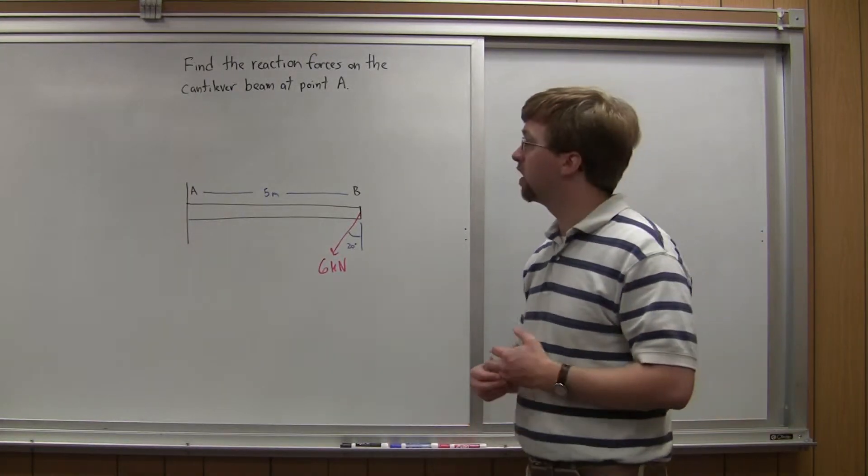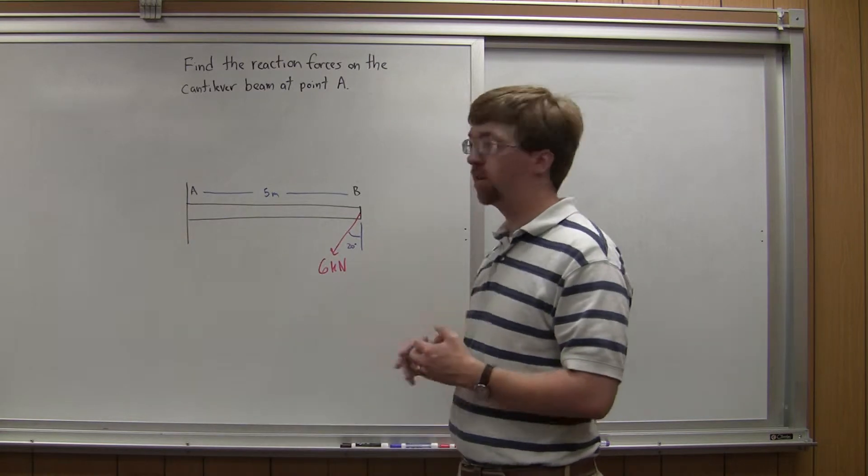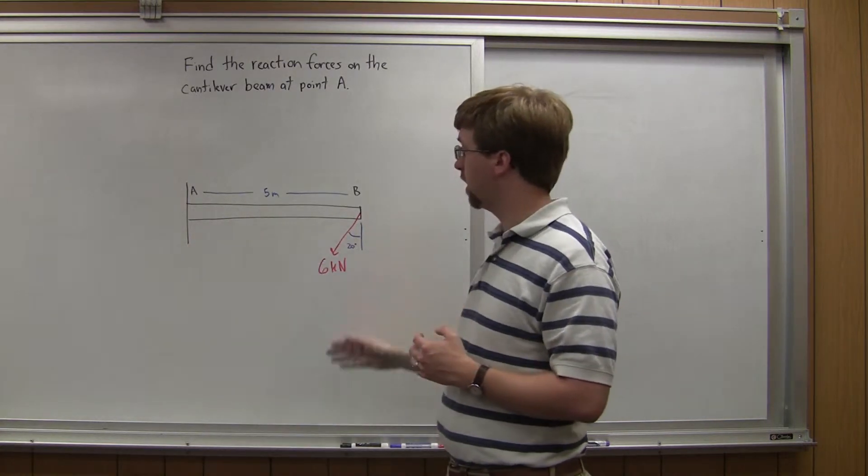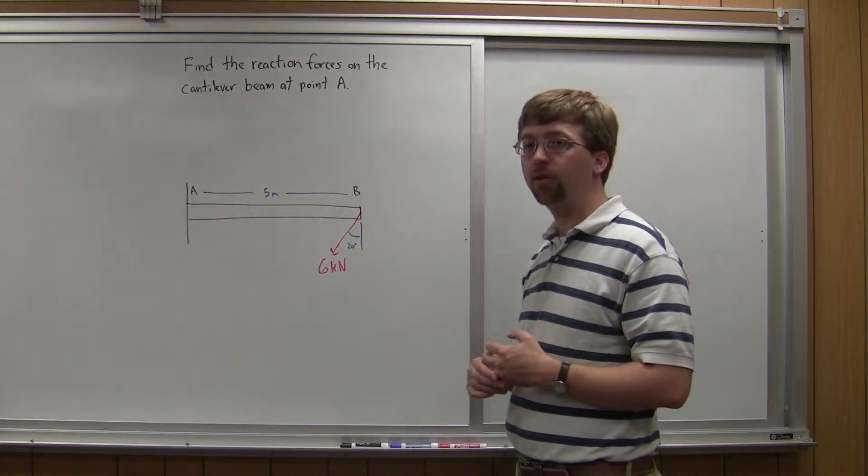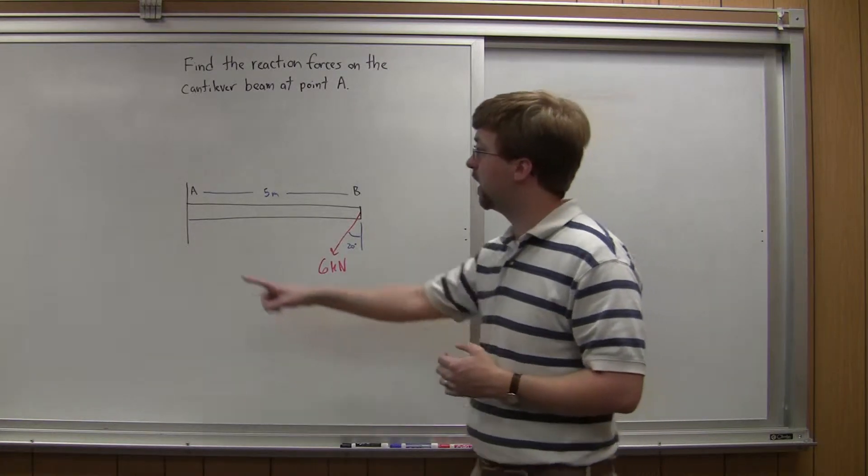Hello, for this statics problem, we've got a cantilever beam, which means it's fixed over at one end, and we've got some force acting on the other end. For this 5 meter long cantilever beam, we've got a 6 kilonewton force acting at a 20 degree angle, and we're asked to find the reactions at point A.